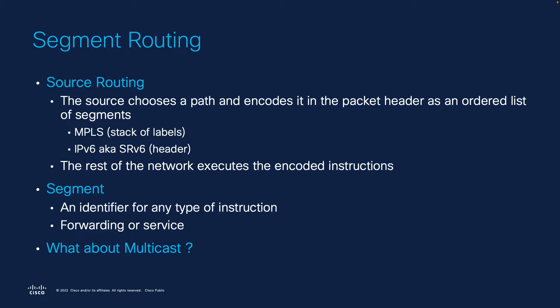We take this identifier and stick it to the packet as a list of segments. That makes sense in Unicast since we have a single destination, but in Multicast we do not — we have multiple destinations.